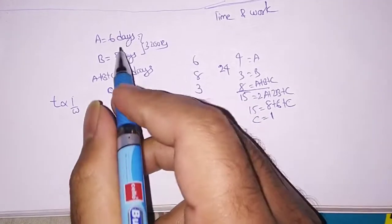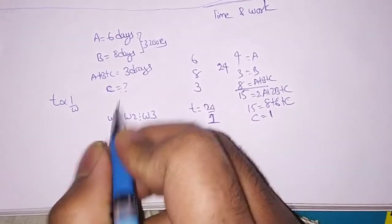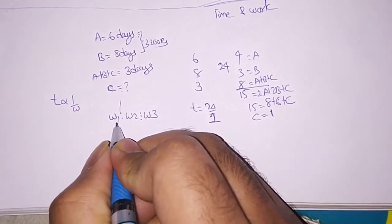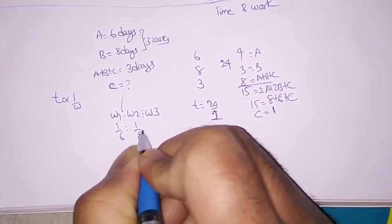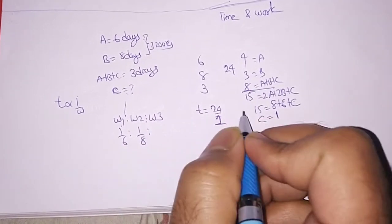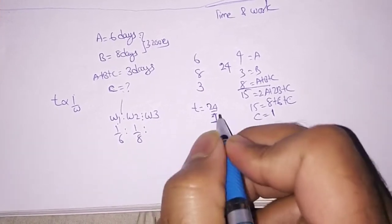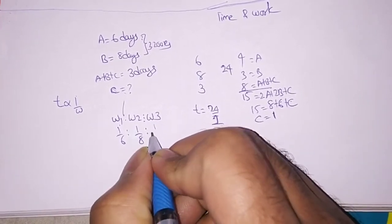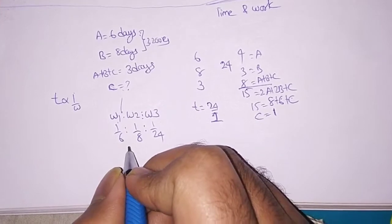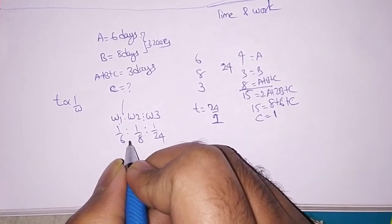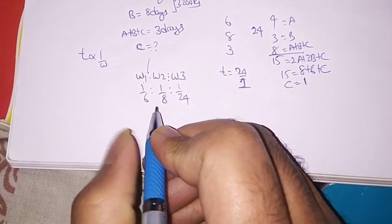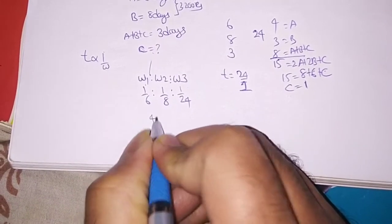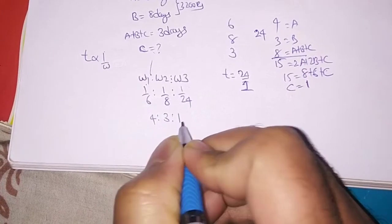So we can write 8 days as, 6 days as 1 by 6 and 8 days as 1 by 8 and W and C, work of C, 24 by 1 which we can write as 1 by 24. And then you have to multiply it with 24, it will become 4, 3, 1.